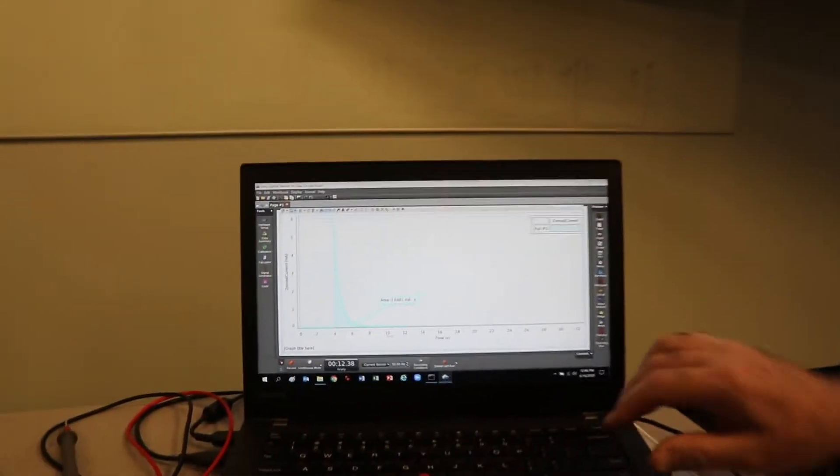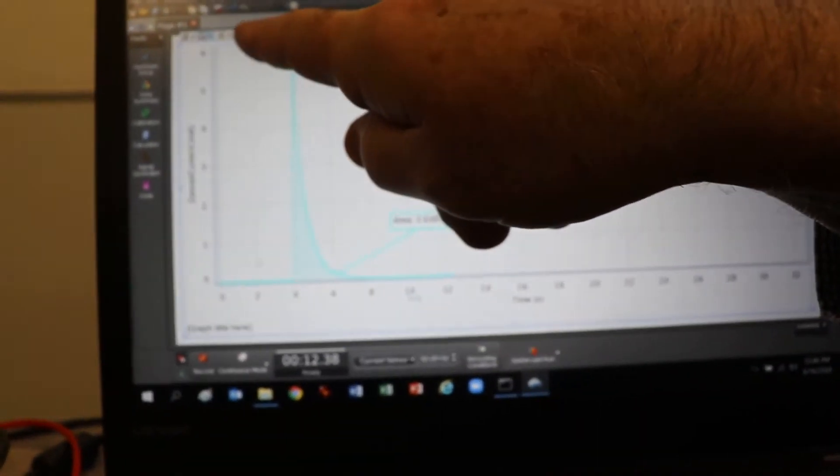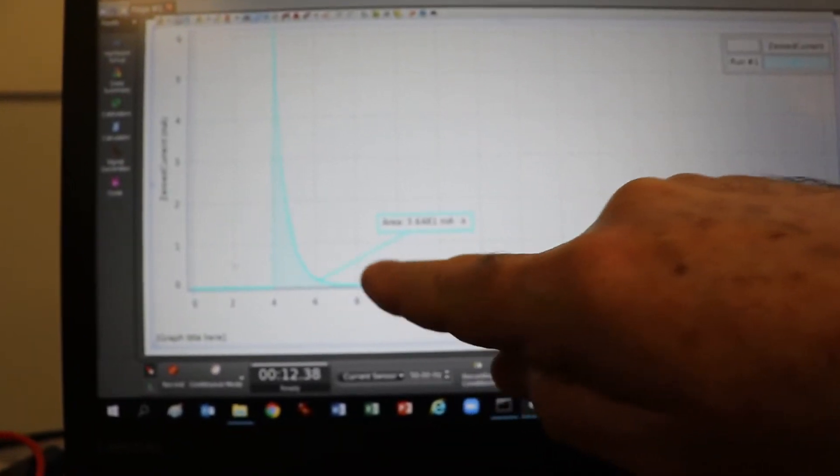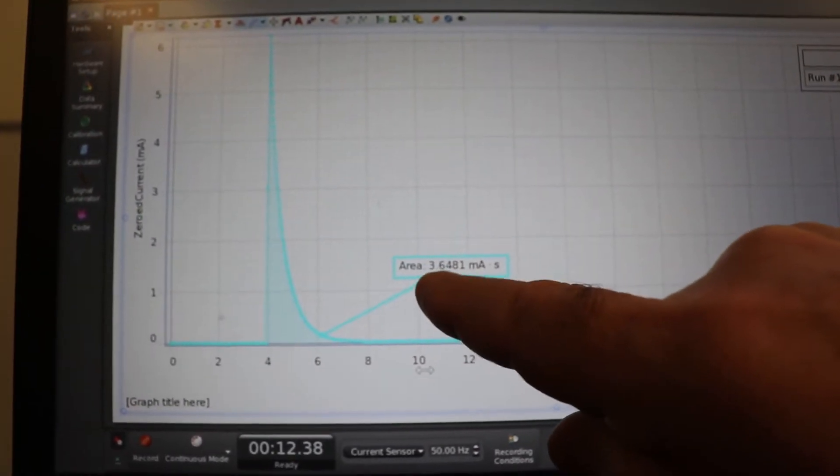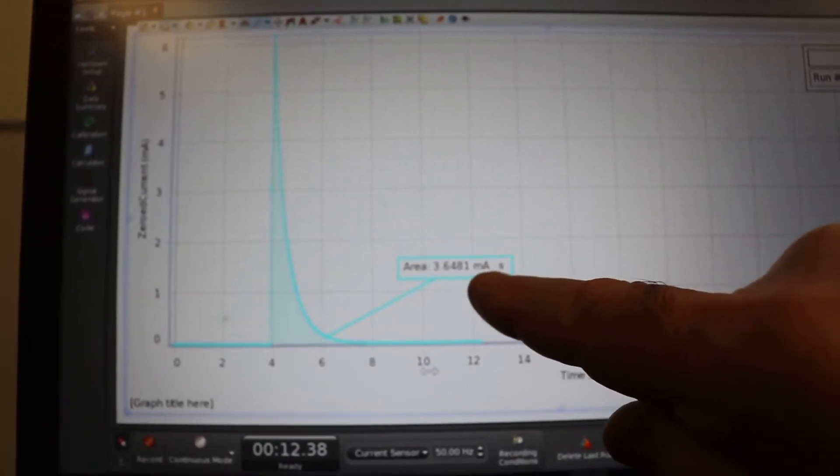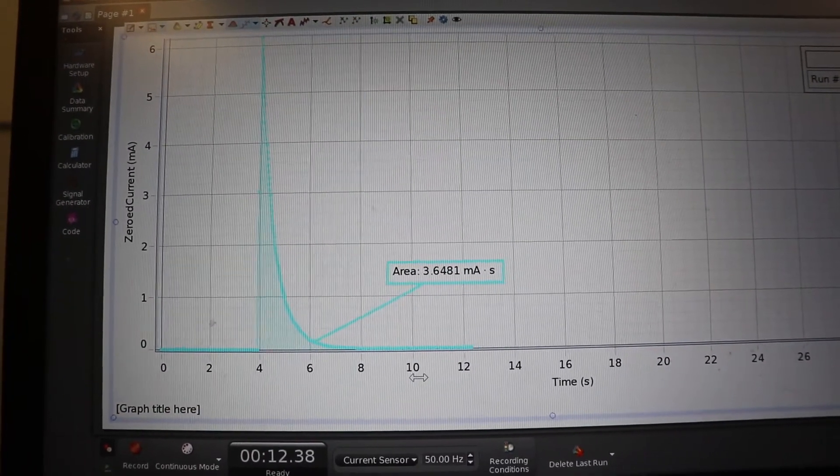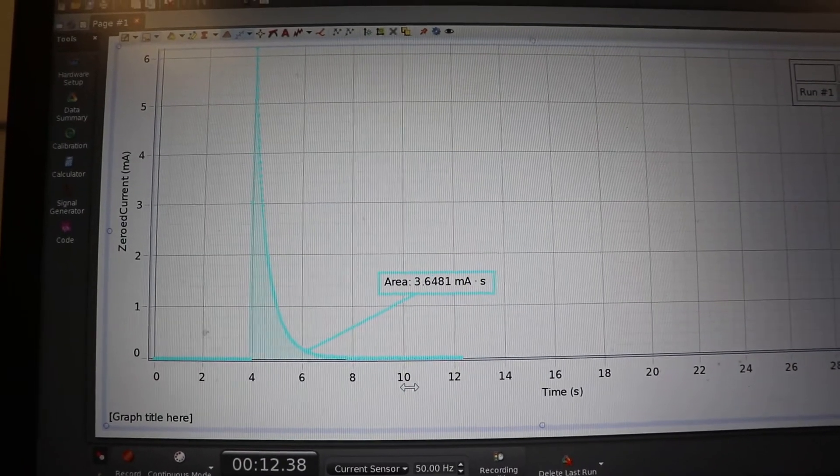Now what's really nice about Capstone is it'll do the integral for you. So up at the top there's a little button right there for integral, and it integrates the current, the area under the curve. And so right here it says 3.6481 milliamp seconds, which turns out to be 3.648 millicoulombs.